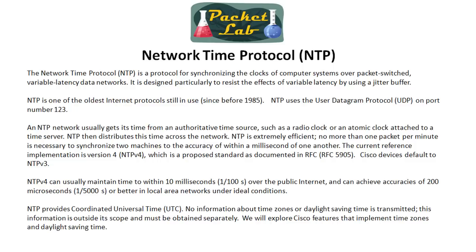An NTP network gets its time from an authoritative time source — something uber accurate, like a radio clock or atomic clock, attached to a time server. It uses a hierarchical system of servers where the atomic clock or authoritative time source is the best. The further you get from that time source, the less accurate the time is going to be. The clock itself is stratum zero. Stratum zero is the source itself — the atomic clock, radio, whatever is giving the time. The next hop, the NTP server, would be stratum one, and it goes down from there.